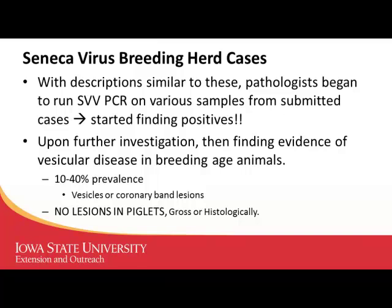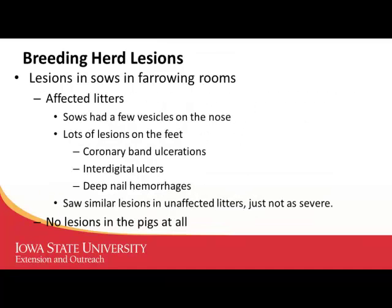Upon further inspection, you could find a few sows with vesicles on their nose. We probably saw more lesions on the feet — in and around the nail bed. We'd see some sows with litters that were unaffected, and some that were clearly affected, so there was an inconsistent pattern. It wouldn't be all sows in the farrowing rooms — just 10, 20, maybe up to 40 percent would be affected.